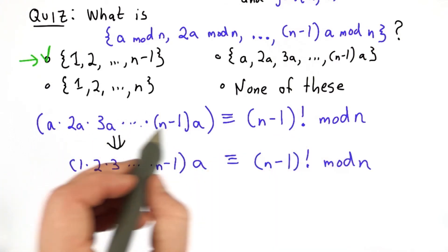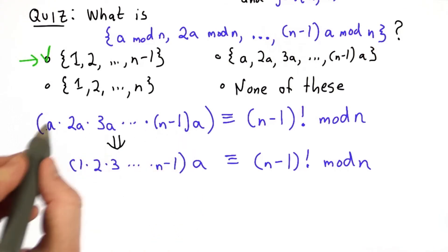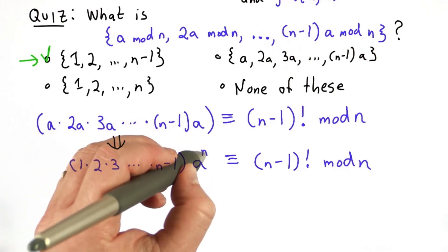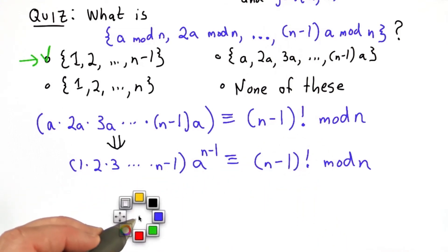So now we can separate this, taking out all the numbers and all the a's. So we'll have n minus 1 terms. So we have a to the n minus 1 here times all the numbers is still equal to n minus 1 factorial. This is the same as n minus 1 factorial.